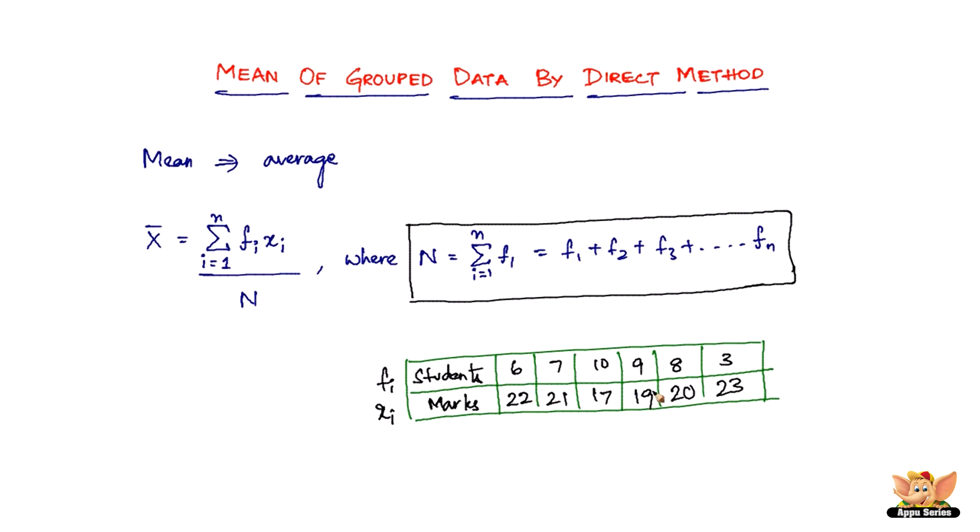So this is the frequency, the number of students that score whatever marks, and these marks is denoted by xi, or you can say the variate. This is the varying thing - the marks vary and how many of them have got so many marks. So this is a grouped data and finding the mean of this grouped data by direct method is using this formula.